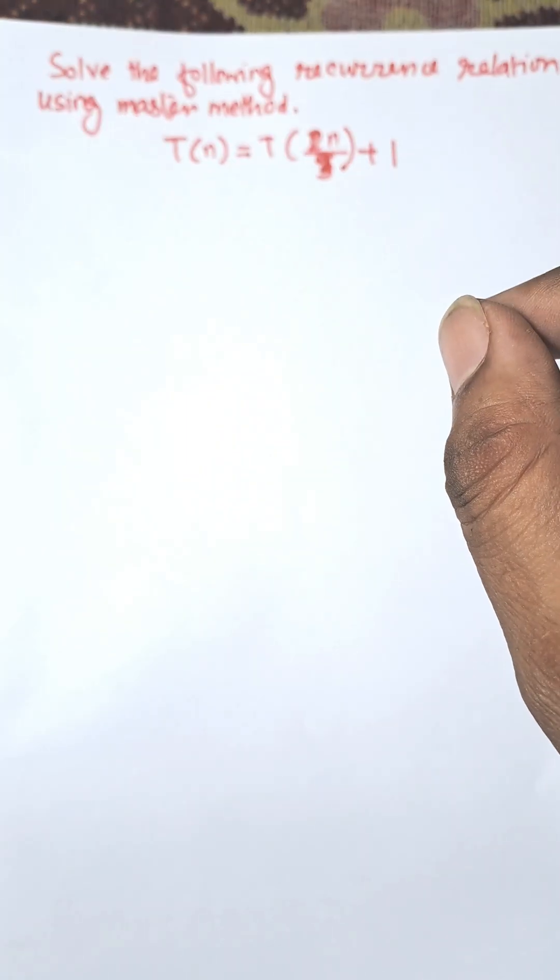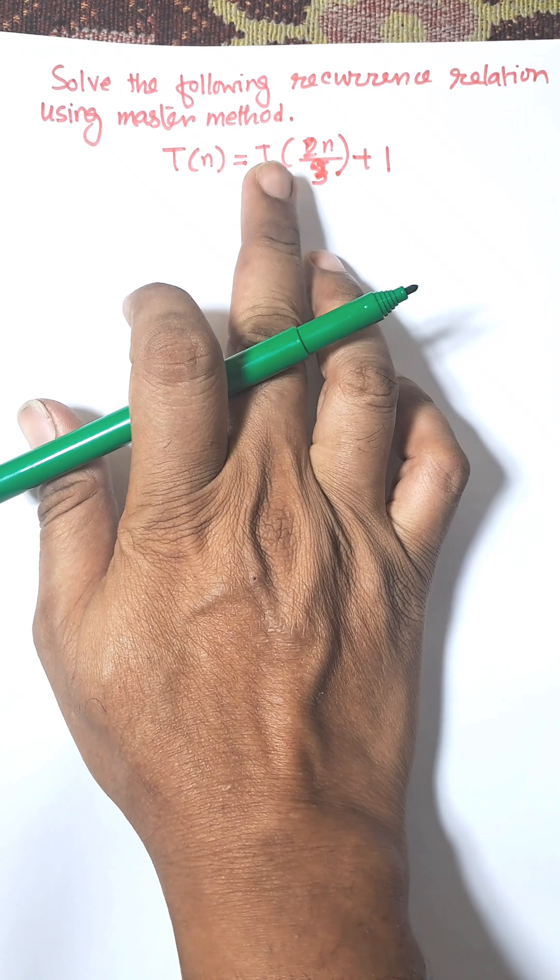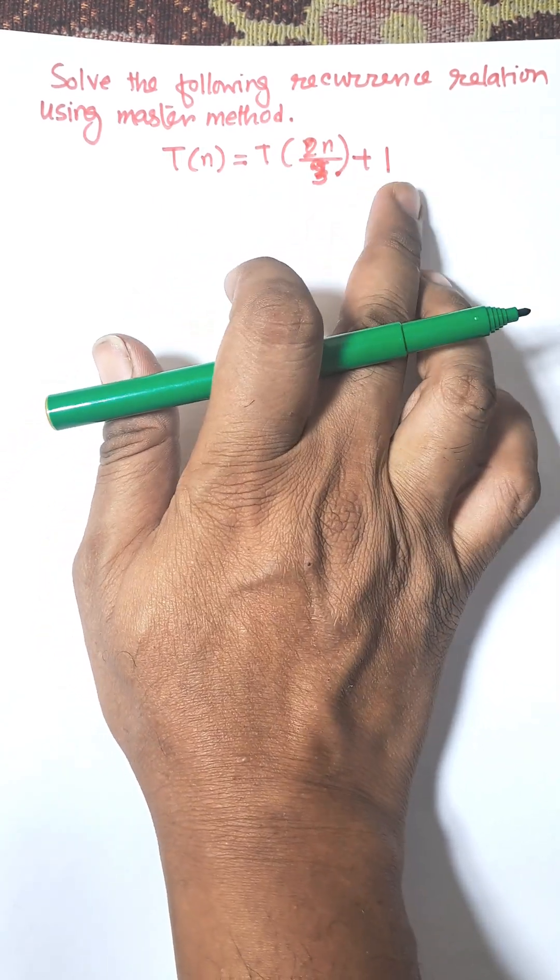Hi everybody, in this video I am going to solve the following recurrence relation using master method. Here T(n) equals T(2n/3) + 1.